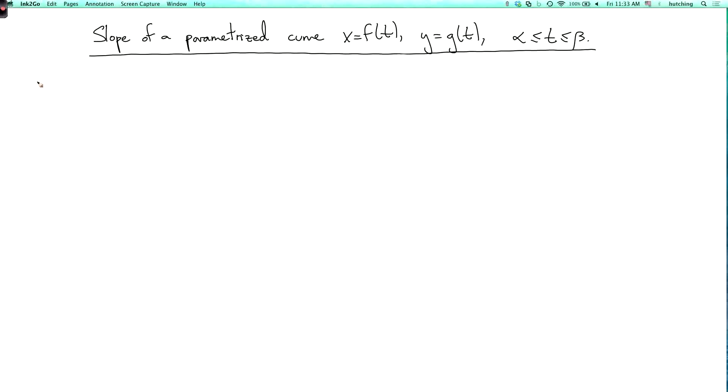So here's the heuristic. We know from single variable calculus that the slope is dy dx. Let's just imagine dividing the top and bottom of this fraction by dt. So we get dy dt over dx dt. And since y is g of t and x equals f of t, I can write this as g prime of t over f prime of t.